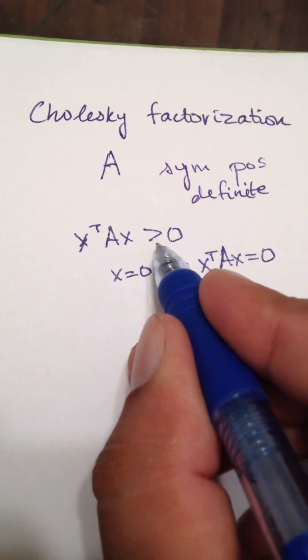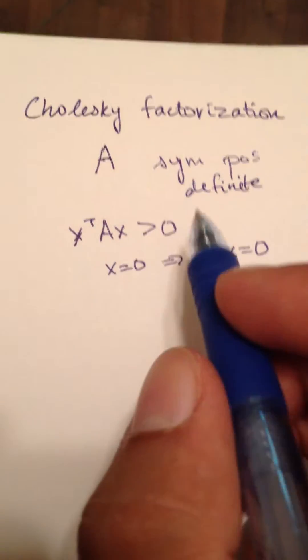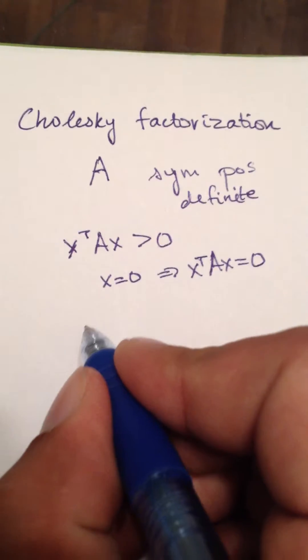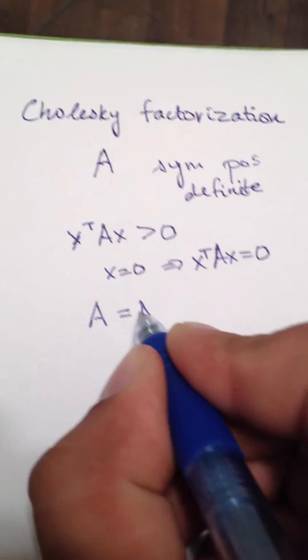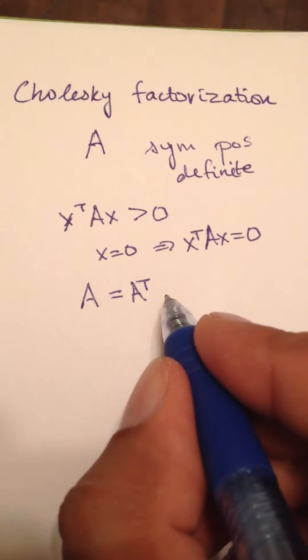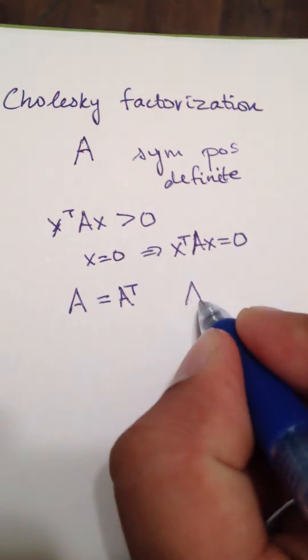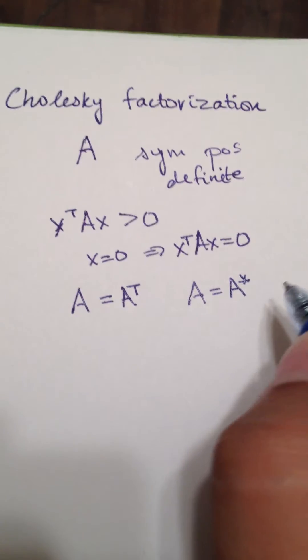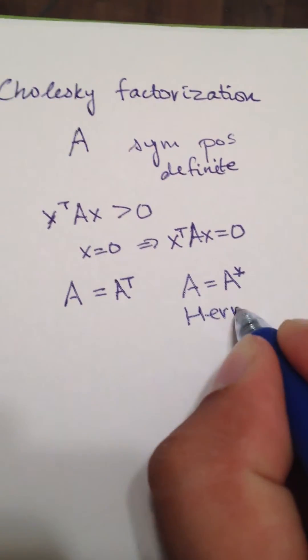If it's positive or equal to 0, we call it semi-positive definite. And what does symmetry mean? Symmetry basically means that A is equal to A transpose. Now, if we're going to talk about complex matrices, this translates to A equals A transpose conjugate, which is also known as a Hermitian matrix.